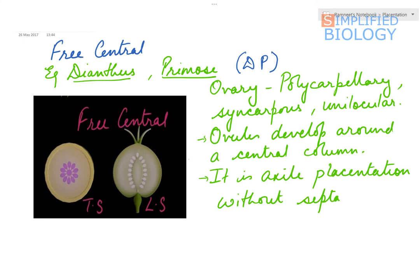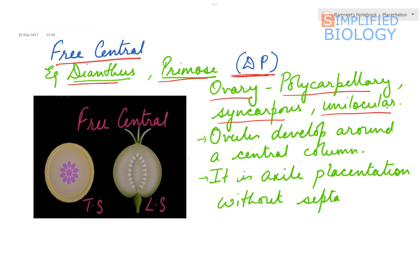Next is free central placentation. Examples are dianthus and primrose — remember this as DP. In free central placentation, the ovary is polycarpillary, syncarpous (united), and unilocular — a single cavity is present. The ovules develop around a central column. It is similar to axile placentation, except there are no septa.